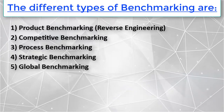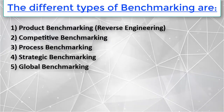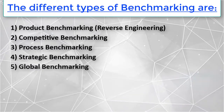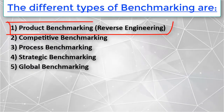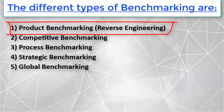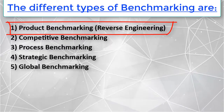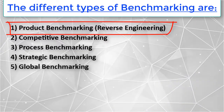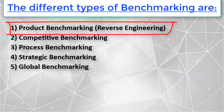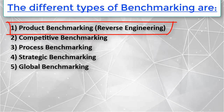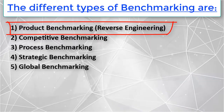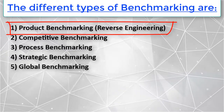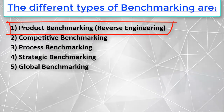Let's dive into the types of benchmarking. The first type is product benchmarking, also known as reverse engineering. It is an age-old practice of product-oriented reverse engineering. Most organizations buy a competitor's product and tear it down to find out how the features and performance compare with their own product. This usually serves as the starting point for improvement.